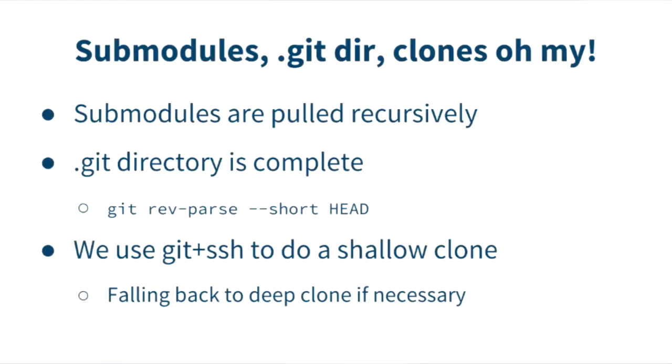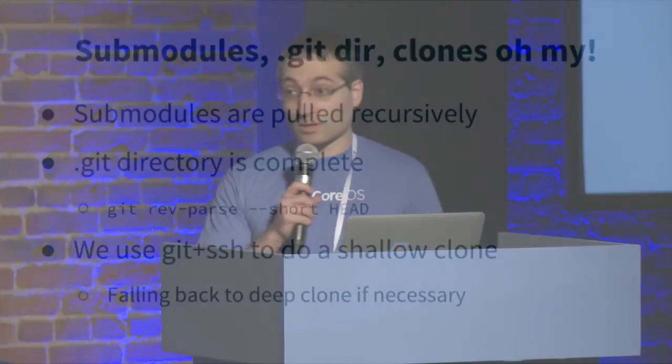Previously, we would download an archive by SHA from GitHub. Unfortunately, this had a few problems. For one, it only worked on GitHub — which wasn't a problem until today, but now we're supporting Bitbucket, GitLab, and custom Git, so it wouldn't work.